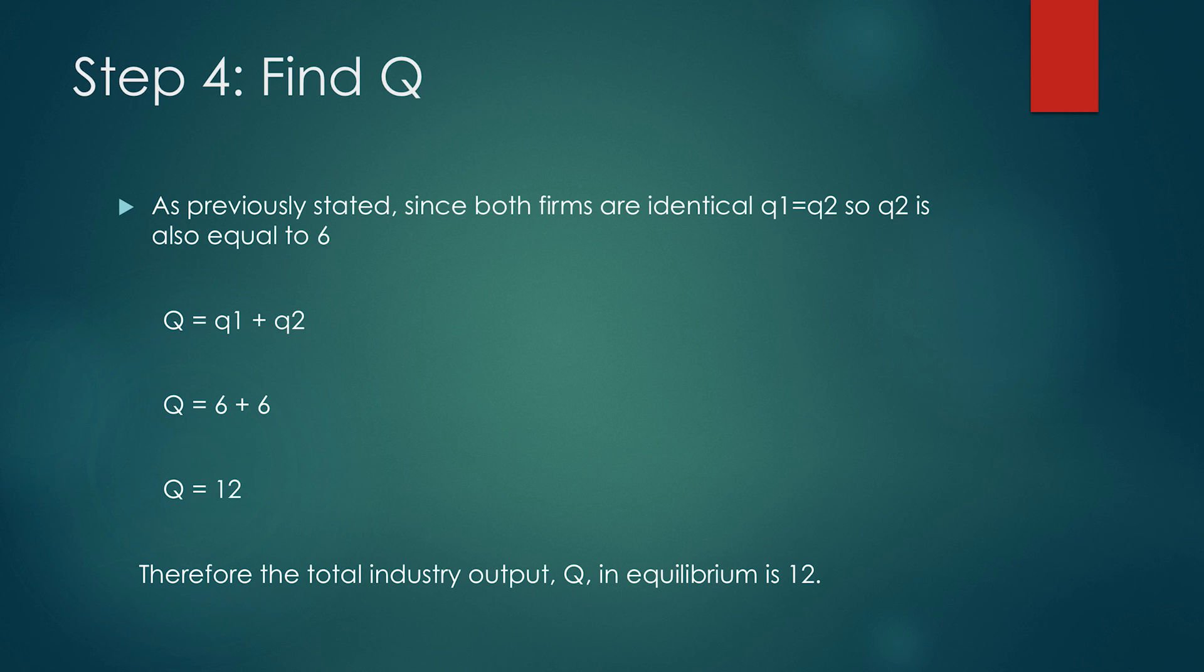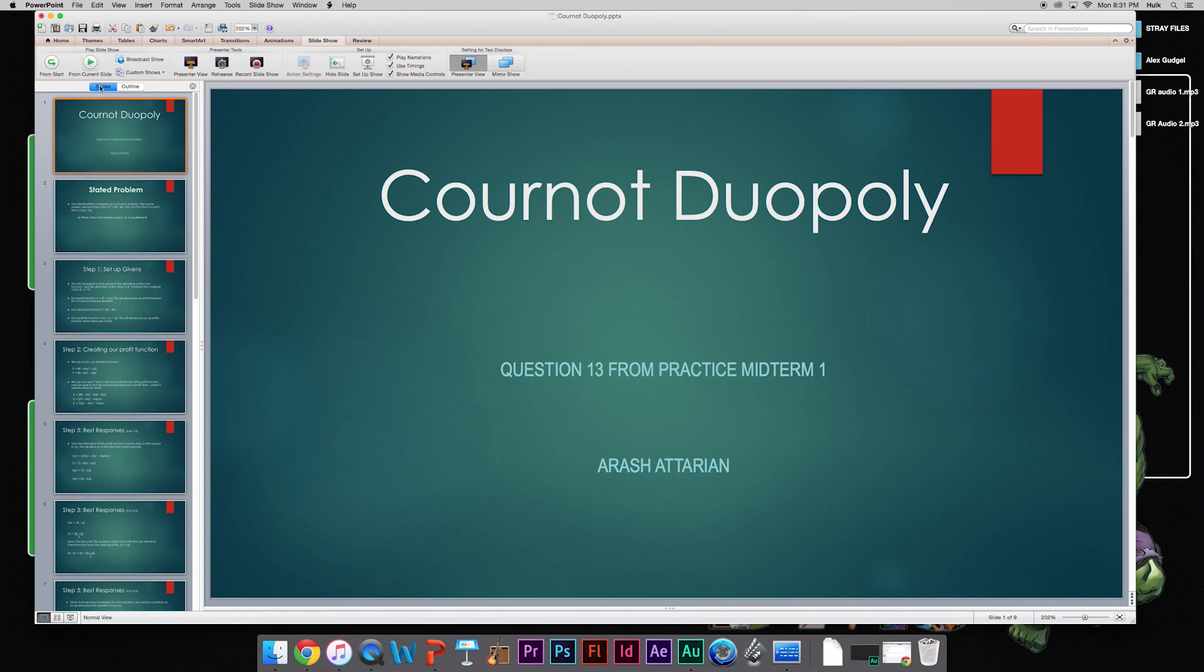Step four is to find Q. As previously stated, since both firms are identical, q1 equals q2, so q2 also equals 6. Therefore, the total industry output Q in equilibrium is 12. That is the answer.